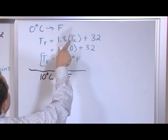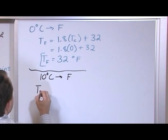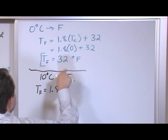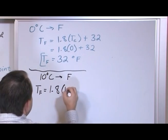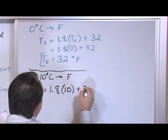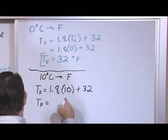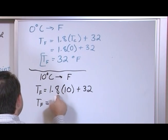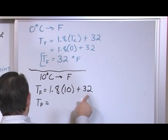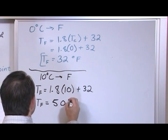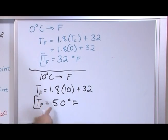But what if you're converting 10 degrees Celsius to Fahrenheit? You use the same exact equation: temperature in Fahrenheit equals 1.8 times the temperature in Celsius, which is given as 10, plus 32. What's 1.8 times 10? That's 18. You take 18, add 32, and you get 50 degrees Fahrenheit. So 50 degrees Fahrenheit equals 10 degrees Celsius.